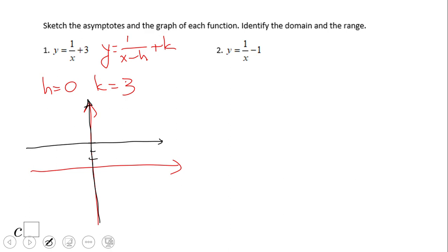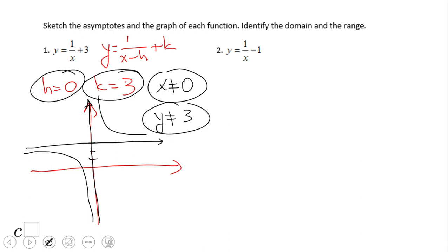All right, and now we have the graph. Remember reciprocal functions, they look like that. This is the graph, but also we have the domain and the range. Domain is any number but zero. So you see how related these two vertical asymptotes are. We cannot plot zero for x, and the range is any number but three. We cannot get three out of this function.